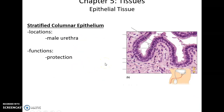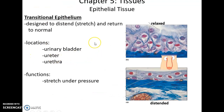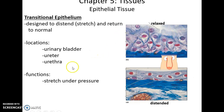Then we have stratified columnar epithelium — two layers of cells, the second layer being columnar in shape, found in areas like the male urethra, and important for protection. And then we have transitional epithelium: it has many, many layers of cells, and these cells can be rounded or flat depending on whether the structure is in a relaxed or stretched state. This tissue is only found in the urinary system — when the urinary bladder has extended and stretched out, the cells of the transitional epithelium are flat, but after you relieve that pressure, they return to the relaxed state.